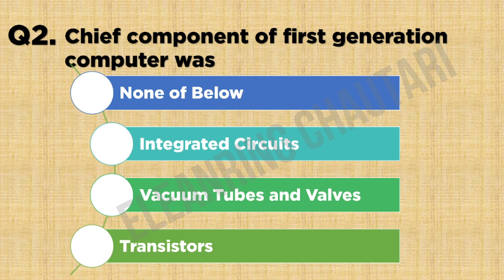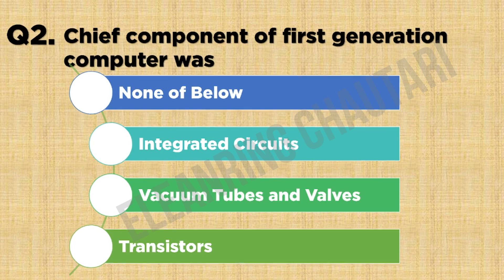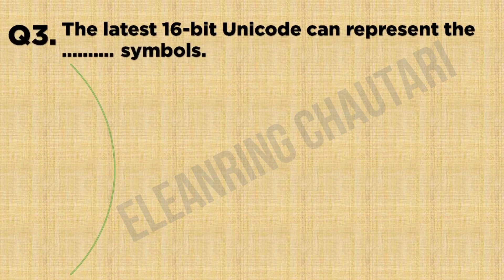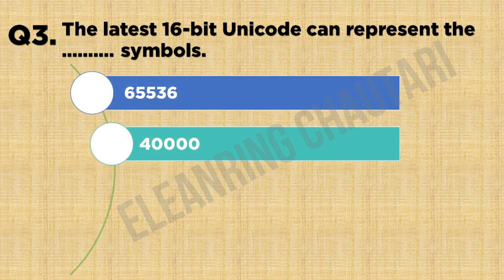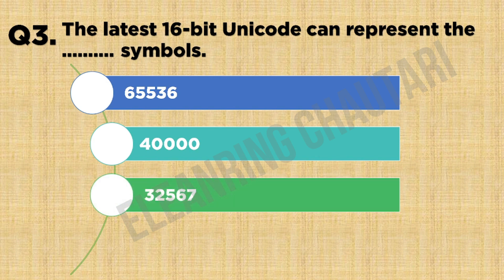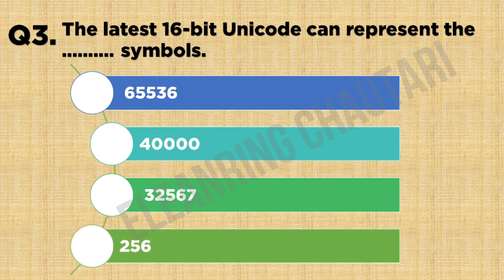The answer is Option B: vacuum tubes and valves. Question 3: The latest 16-bit Unicode can represent how many symbols? Option A: 65,536. Option B: 40,000. Option C: 32,567. Option D: 256.